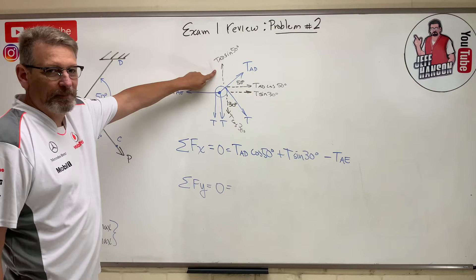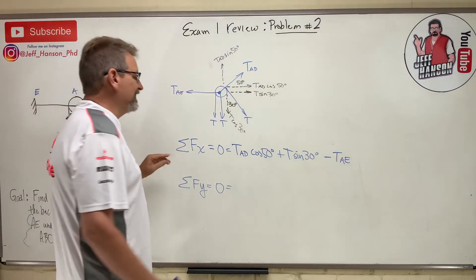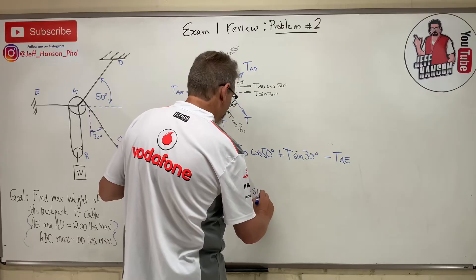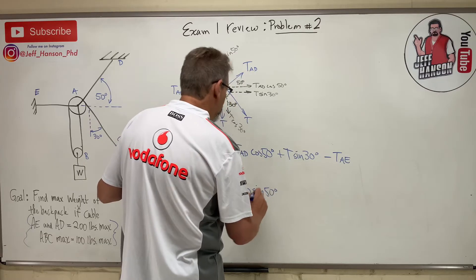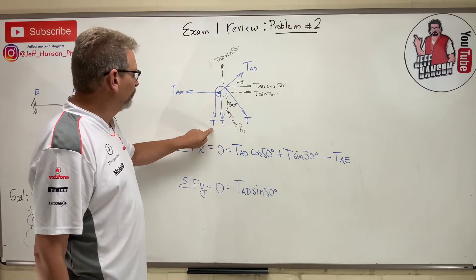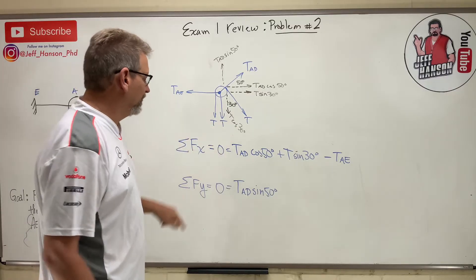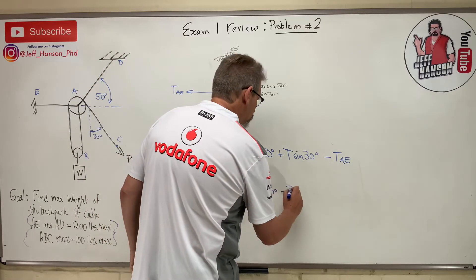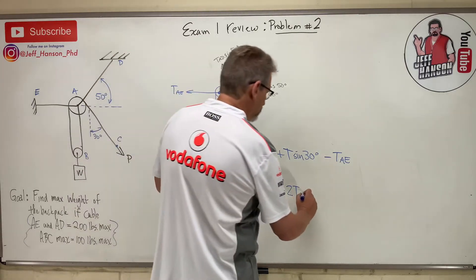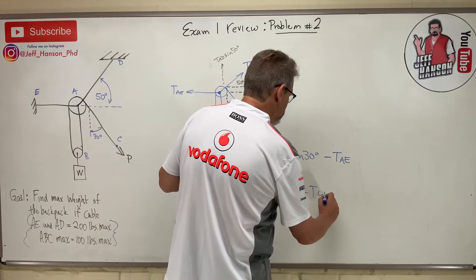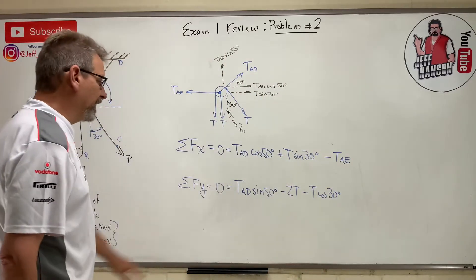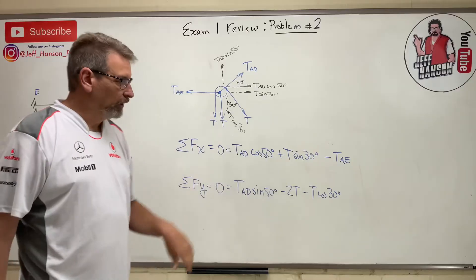For the Y equation, writing the positive stuff first: T_AD·sin50, then going downhill we've got minus 2T and minus T·cos30 equals zero. Some positives and some negatives — looking good.